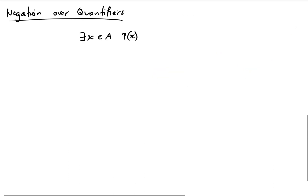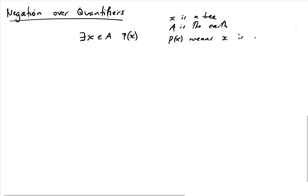Let's start with a simple example. Here's a statement: there exists an x in my set A such that P(x) is true. To give it meaning: x is a tree, A is the earth, and P(x) means x is green. So this statement says: there exists a tree on earth that is green.